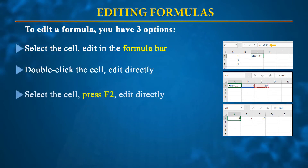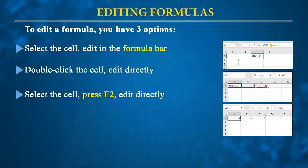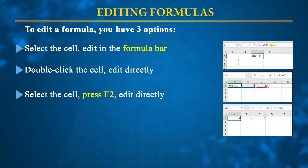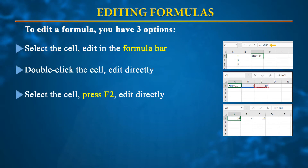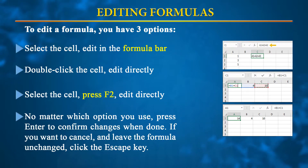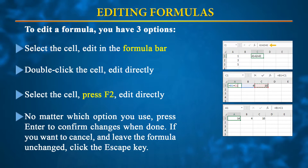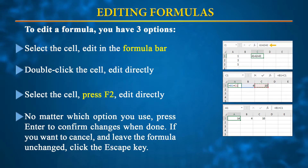If you want to edit a formula you typed incorrectly, you can select the cell and press F2 to edit it, then press Enter to confirm. Alternatively, select the cell, go to the formula bar (indicated by a yellow arrow), edit the formula there, and press Enter. The corrected version will be reflected in the respective cell. Press Escape if you want to cancel and leave the formula unchanged.